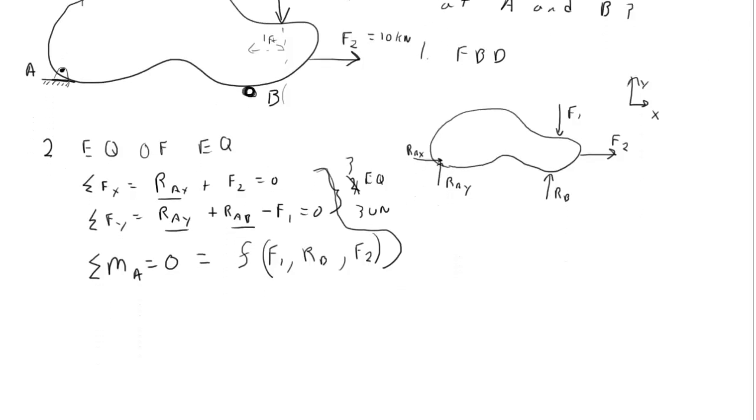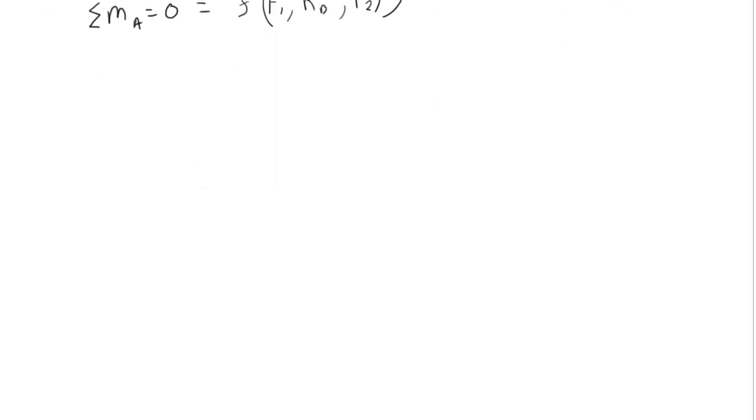Now, in three dimensions, things get even more, perhaps, exciting. First of all, the free body diagram is a little more complicated to draw. Second of all, just like in a particle equilibrium, we now have not two, but three force equations. So we have the sum of the forces equals zero, which we can say that's the sum of the forces in X has to equal zero, sum of the forces in Y has to equal zero, and the sum of the forces in the Z direction equals zero. So we have three equations here.